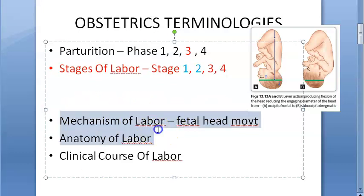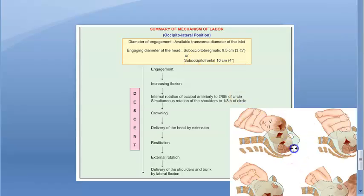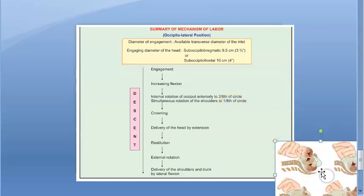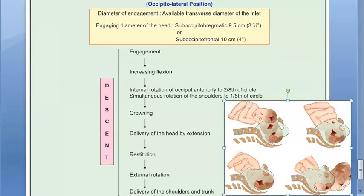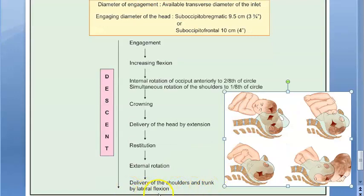For mechanism of labor, there are specific terminologies: engagement, flexion, internal rotation, crowning, delivery of the head by extension, restitution, external rotation, then delivery of the shoulders and trunk by lateral flexion. You'll have to explain all these steps.